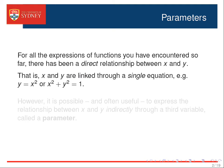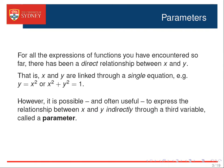In other words, the variables x and y have been linked through a single equation, such as y equals x squared, or x squared plus y squared equals 1. However, it's possible and often useful to express the relationship between x and y indirectly through a third variable called a parameter.